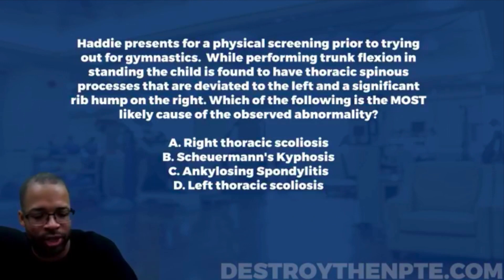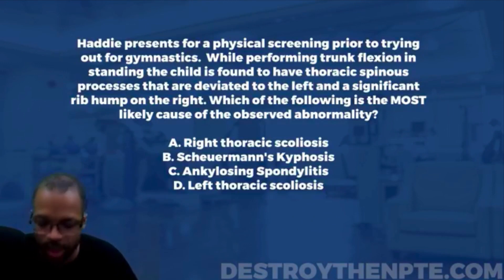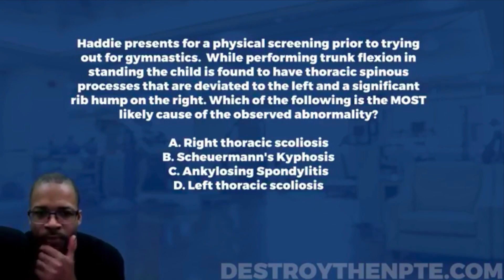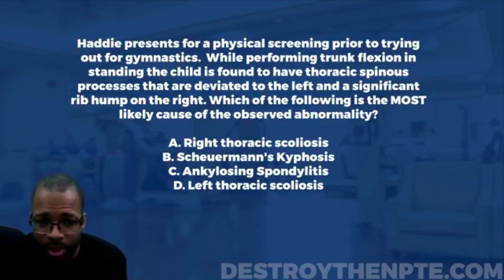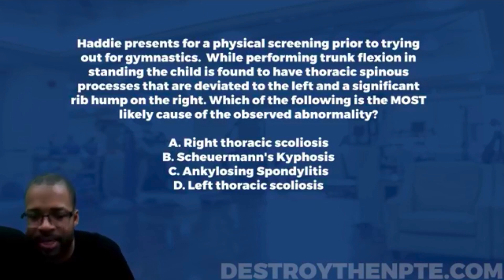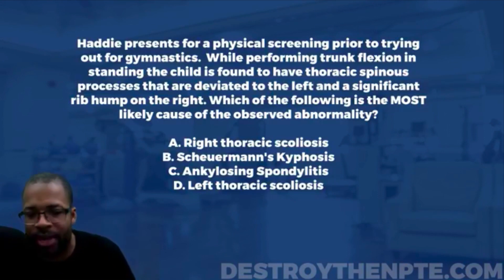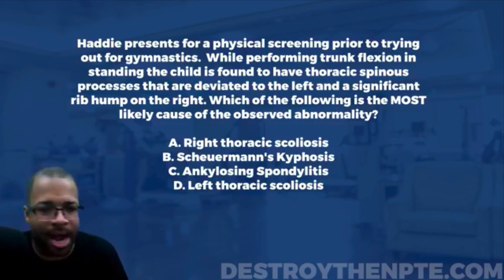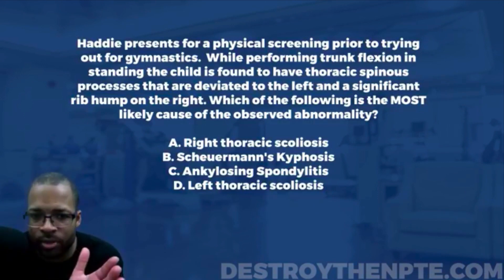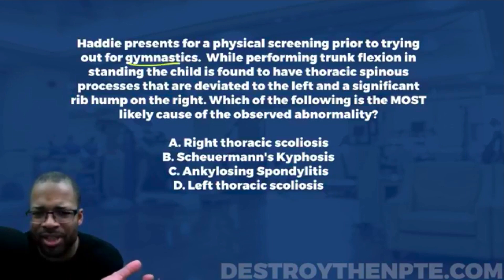Let's go ahead and knock out this question. We're dealing with some scoliosis tonight. Hattie presents for a physical screening prior to trying out for gymnastics. While performing trunk flexion in standing, the child is found to have thoracic spinous processes that are deviated to the left and a significant rib hump on the right.